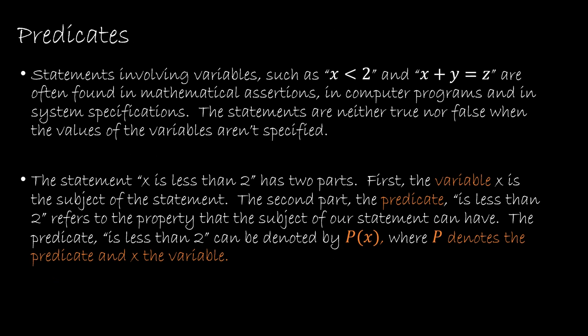So here's what a predicate is all about. If we have a statement like x is less than 2 or x plus y equals z, obviously these are things that we see in mathematics all of the time and in computer programming. These statements aren't true and they're not false unless I were to give you a value. So if I said x is 5 and then x is less than 2, now all of the sudden I have a truth value because 5 is not less than 2 so that would be false.